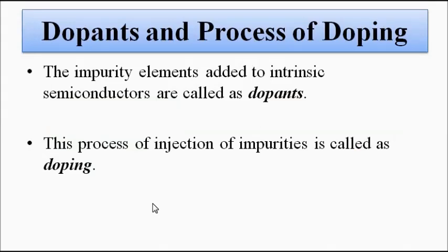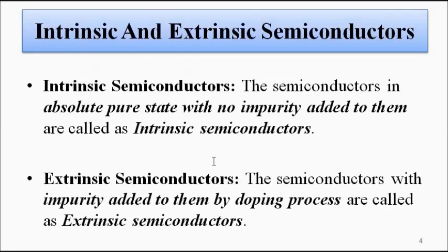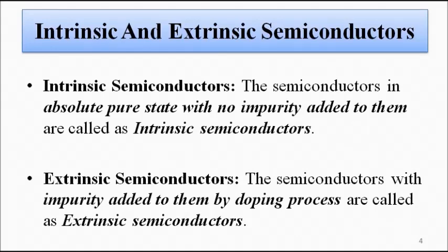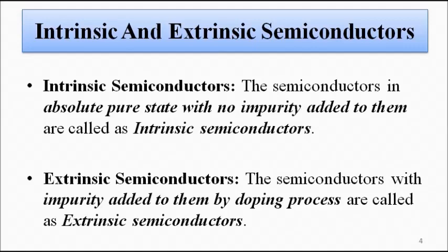In a pure semiconductor — be it silicon or germanium — called an intrinsic semiconductor, there is no impurity and no foreign element added. If we add a certain small amount of impurity, especially pentavalent or trivalent impurity, the conductivity can be significantly affected. Pentavalent impurity means elements with five valence electrons; trivalent impurity means elements with three valence electrons. The reason why three and five are important will become clear shortly.